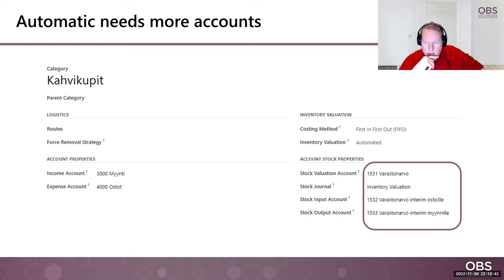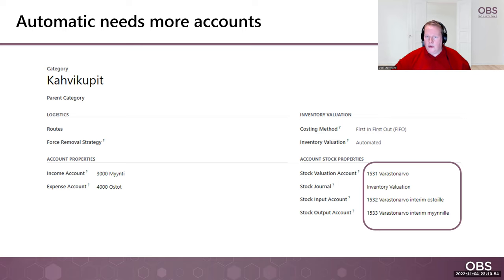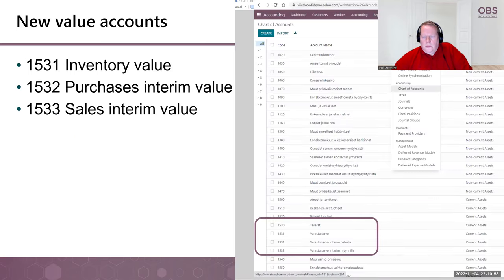In order not to mess up the already existing accounts, we have created these new accounts, and we have also set them to be reconcilable — just to make things easier. We can see the accounts created in accounting and chart of accounts. We have created 1531 as inventory value, 1532 as purchase interim value, and 1533 as sales interim value.